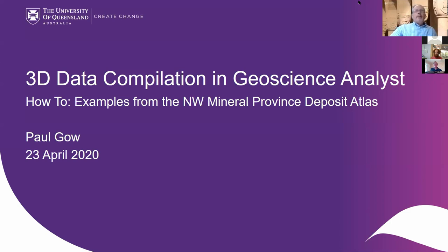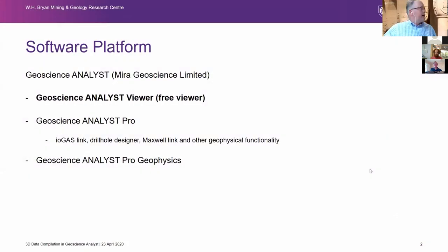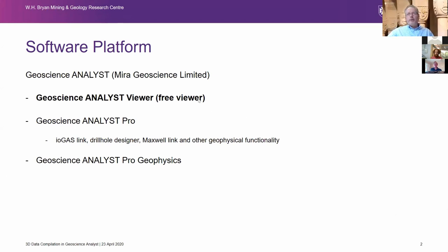The software platform we're using is Geoscience Analyst, basically done by Mira Geoscience — the people involved with GoCAT. We've structured the atlas so that the Geoscience Analyst viewer project can be viewed with the free viewer, which can be downloaded and installed relatively easily. They have various other types of systems and add-on modules as well.